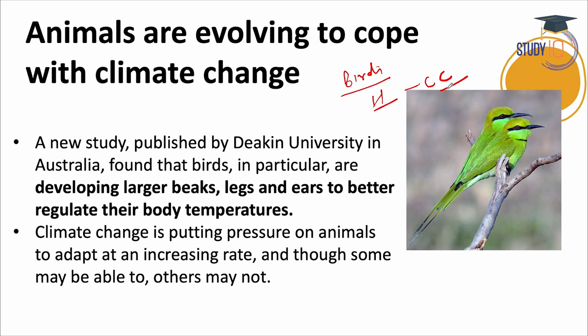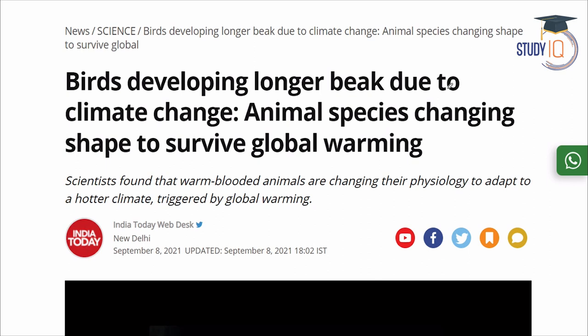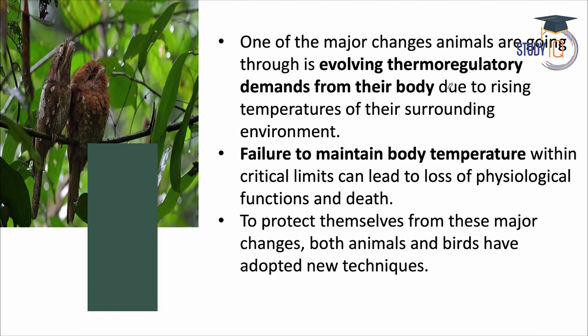Due to climate change, animals and birds are evolving — adapting to their environment by making changes. For example, in response to heat, some animals' beaks are increasing in size, and their legs and ears are getting larger so they can regulate body temperature and gain more surface area to cool off. However, the rate of evolution is increasing and some birds can adjust while others cannot. Species that can't take this challenge are declining — consistent with Charles Darwin's theory of survival of the fittest.